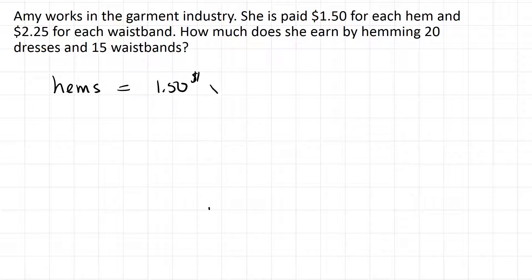Times 20 hems, 20 dresses that she hems, and that works out to be $30. Now for the waistbands, she makes a bit more, $2.25, and she does 15 of them, and that works out to be $33.75.